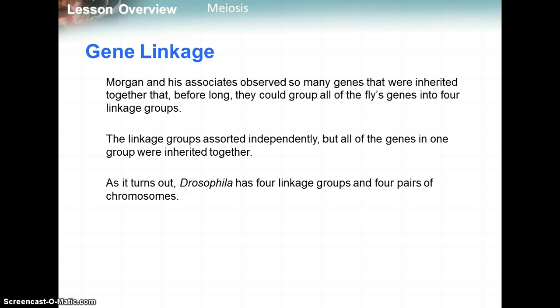Morgan and his associates observed so many genes inherited together that they could group all the fly's genes into four linkage groups — four major groups where a bunch of genes would be inherited together. It's like four big groups of friends: the people within one group always go everywhere together, but two separate groups don't always go to the same places. The fruit fly has four linkage groups because it has four pairs of chromosomes.